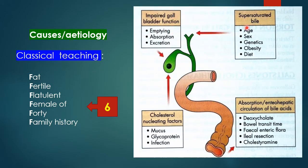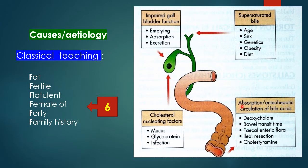Four important predisposing conditions to gallstone formation: first, impaired gallbladder function — impaired emptying, absorption, or excretion; second, supersaturated bile due to concentrated bile related to age, sex, genetics, obesity, and diet; third, cholesterol nucleating factors such as mucus, glycoprotein, and infection; fourth, abnormalities in absorption and enterohepatic circulation of bile acids. Stone formation occurs when bile salts and lecithin fail to keep cholesterol in solution — due to excess cholesterol, reduced bile acids, or reduced lecithin — creating lithogenic bile with high tendency to form gallstones.